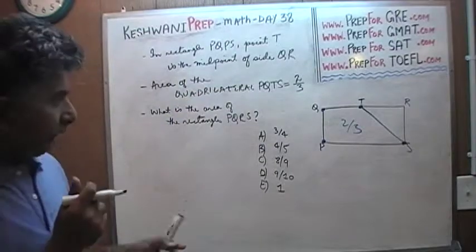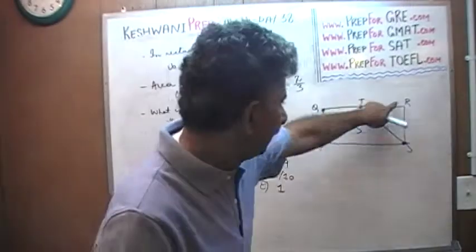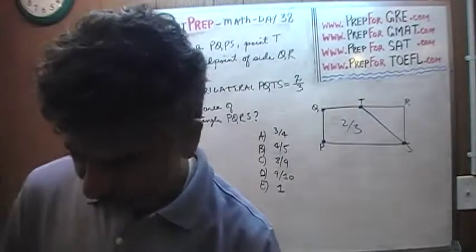The question simply is how much is the whole thing? How much is the area of PQRS? That's all, that's how straightforward it is.